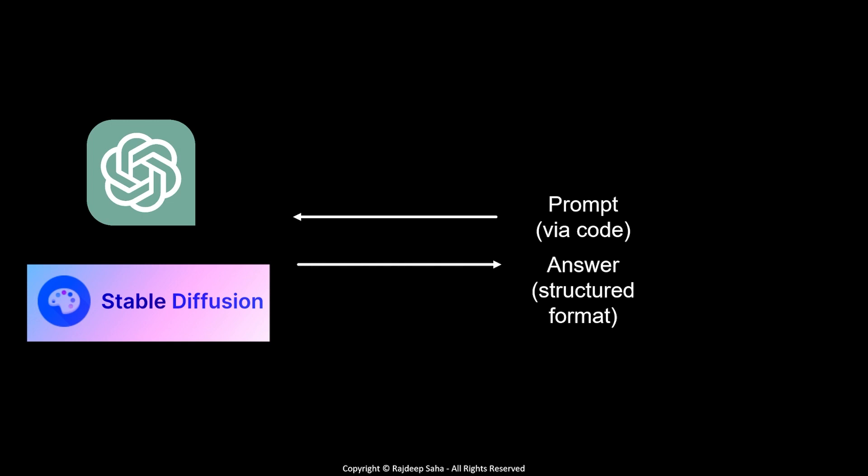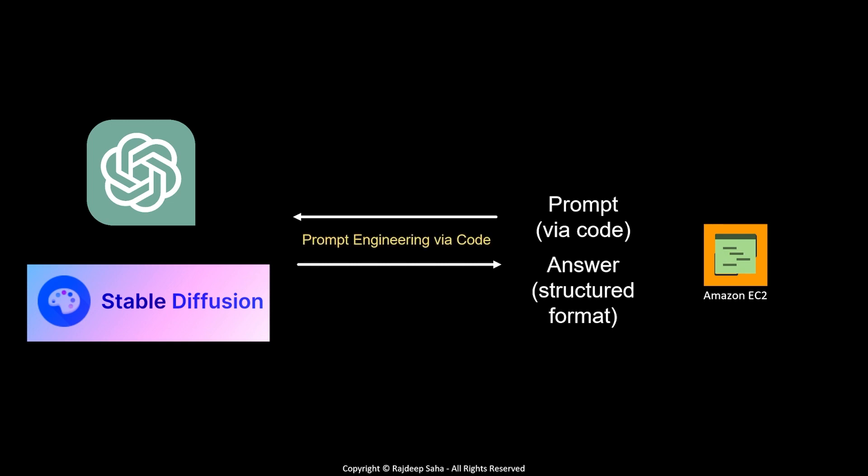Where will this code run? Your code can run in any compute service such as Amazon EC2. Inside this EC2, your code will run, and we call this prompt engineering via code. Learning prompt engineering using the ChatGPT website or console is useless in applications. I know it's easy and fun to do, and there are thousands of videos out there because they get clicks. But if you go for an interview for prompt engineering or Gen AI, everyone's going to ask you: can you tell me how to send this prompt and parse your answers using some kind of programming language?